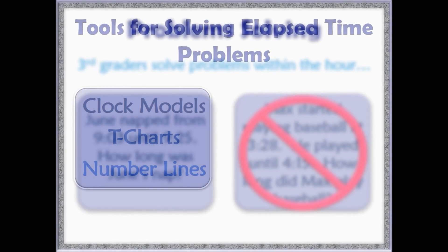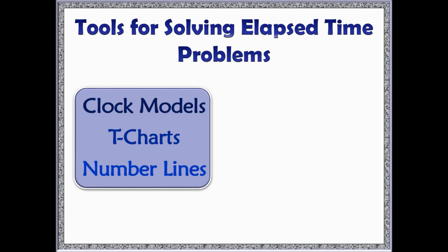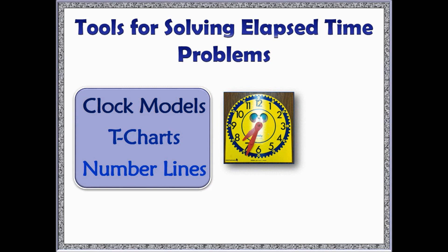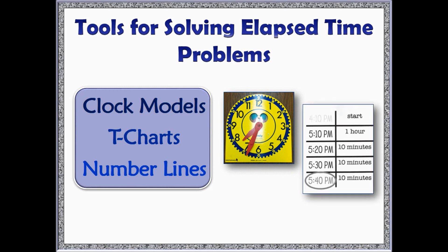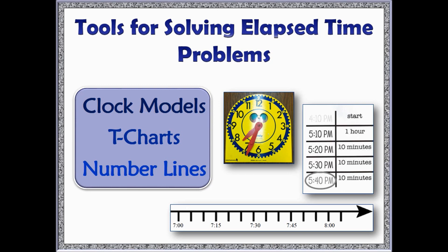The unpacking document suggests a variety of tools for solving elapsed time problems. For example, clock models, T-charts, and number lines. Over the next few slides, we will discuss how to use each of these models.